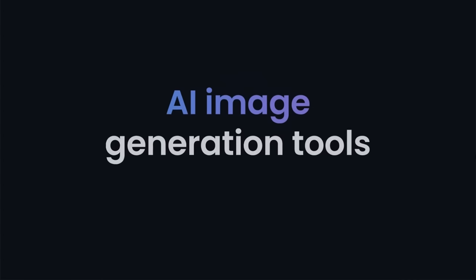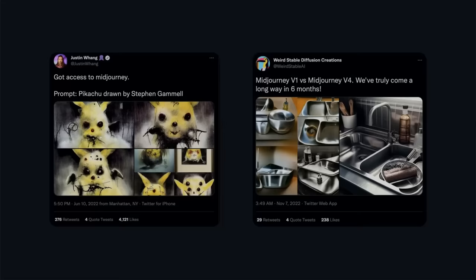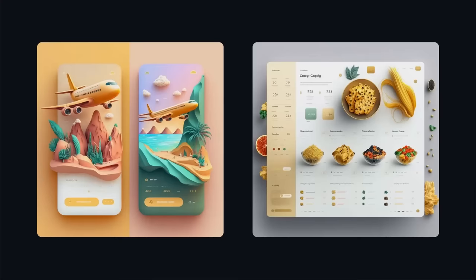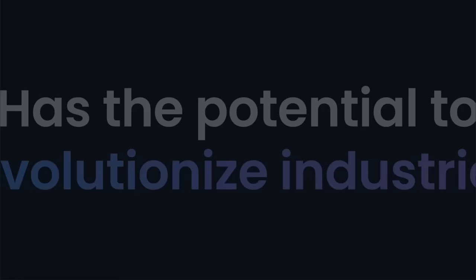AI image generation tools such as Midjourney and DALL-E have taken over social media by creating a wide range of images, everything from memes and art to beautiful UI/UX designs. This technology is changing the way we interact with images and has the potential to revolutionize industries.